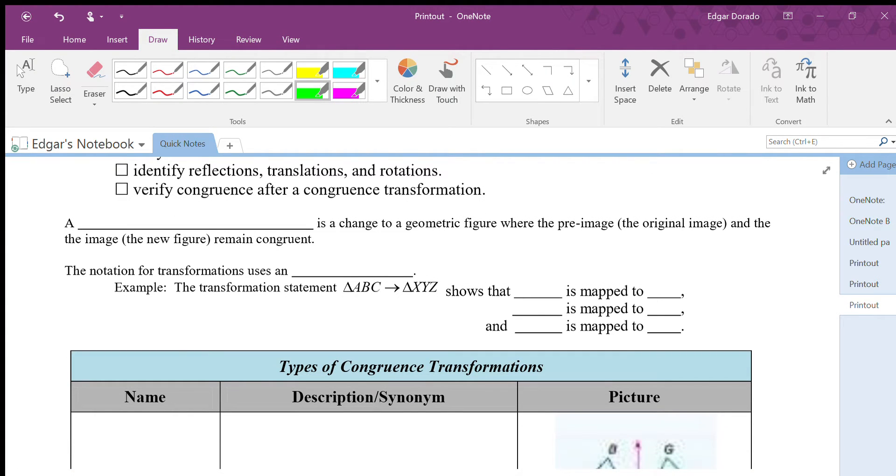Alright, so let's actually put some work behind all of those goals there. So let's go ahead and define our first item here. So this is a transformation. Transformation is a change to a geometric figure where the pre-image, or the original image, and the new image, or what's called the image, remains congruent. So basically we're taking a particular geometric figure, we are doing something to it, so it shows a whole new image.